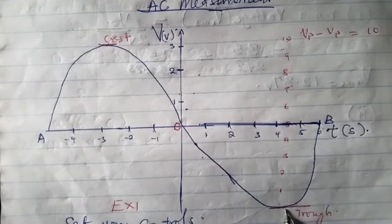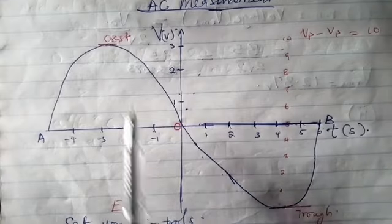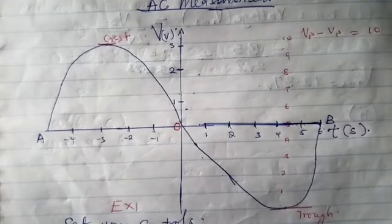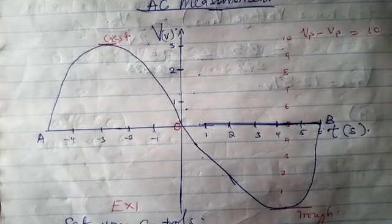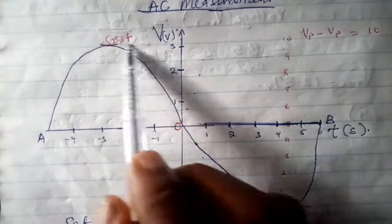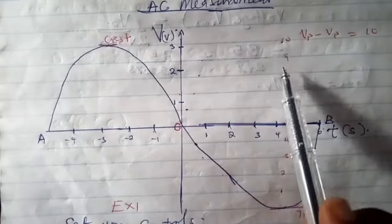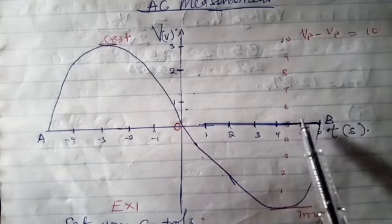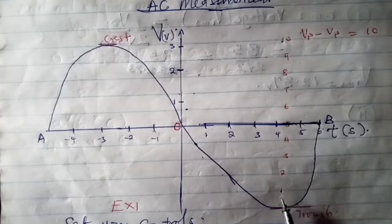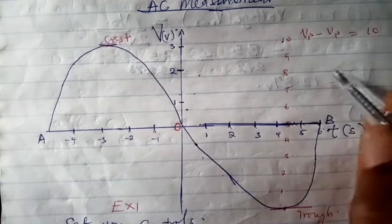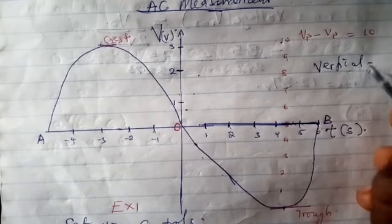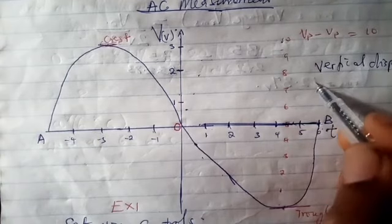If you count from the minimum to the maximum, you have to get the number of divisions. According to some questions, that is what they call vertical display on the screen. Let's count from this place. We have 0, 1, 2, 3, 4, 5, 6, 7, 8, 9, 10. So we can have a vertical display of 10.